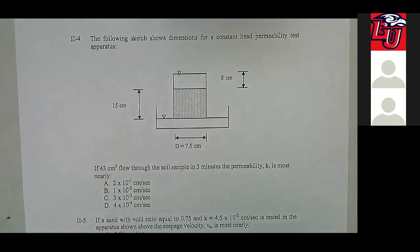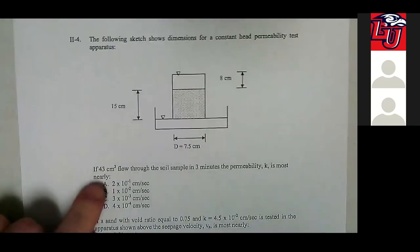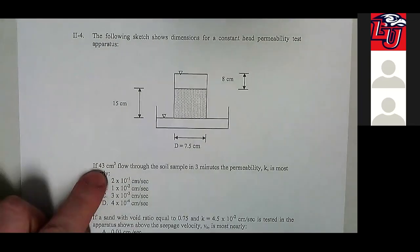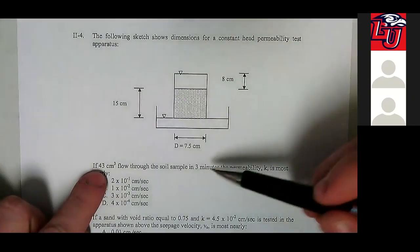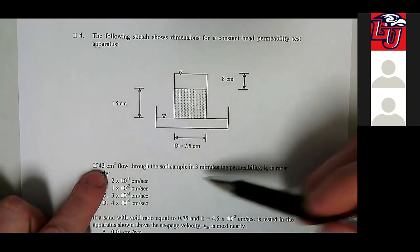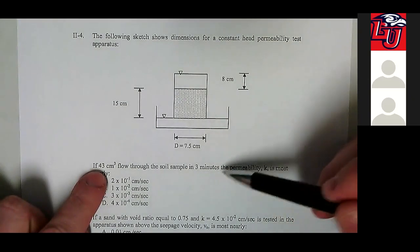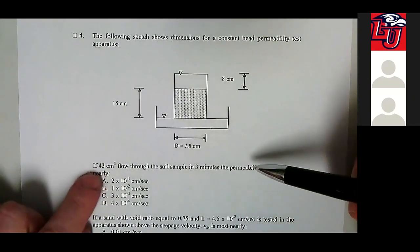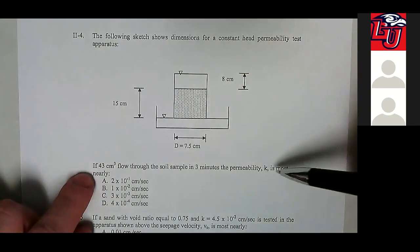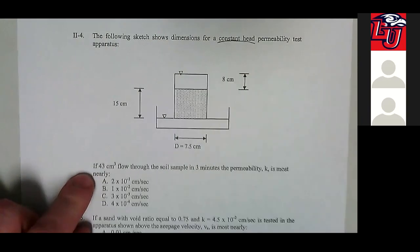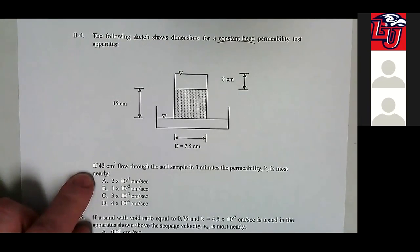We have 43 cubic centimeters of flow through the soil sample in a time of three minutes, so calculate the permeability. This is a constant head permeability test — key to note here.